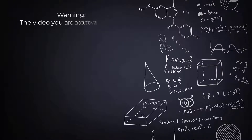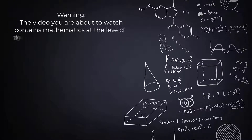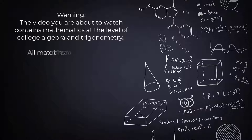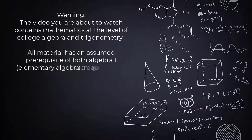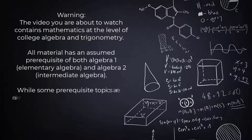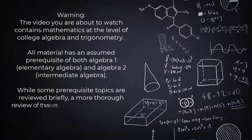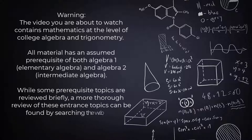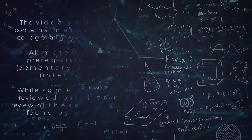Warning! The video you're about to watch contains mathematics at the level of college algebra and trigonometry. All material has an assumed prerequisite of both Algebra 1, which is Elementary Algebra, and Algebra 2, which is Intermediate Algebra. While some prerequisite topics are reviewed briefly, a more thorough review of these entrance topics can be found by searching the web.